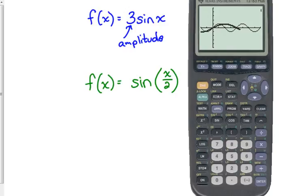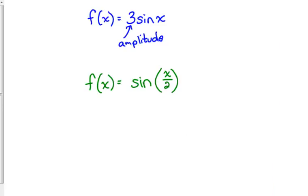It changed horizontally — there's no vertical change like the last one. The last one got taller; this one still has the same maximum and minimum but hits them in different places. Instead of going through two cycles between zero and four pi, it's only completed one cycle between zero and four pi. So now our period for this function is four pi.